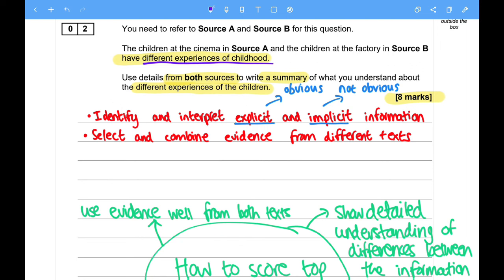Use details from both sources to write a summary. So you have to write a summary. So there is no need for you to analyze language. There is no need for you to analyze structure. To write a summary of what you understand about the different experiences of the children. So you have to find evidence from the text to show how they have different experiences.